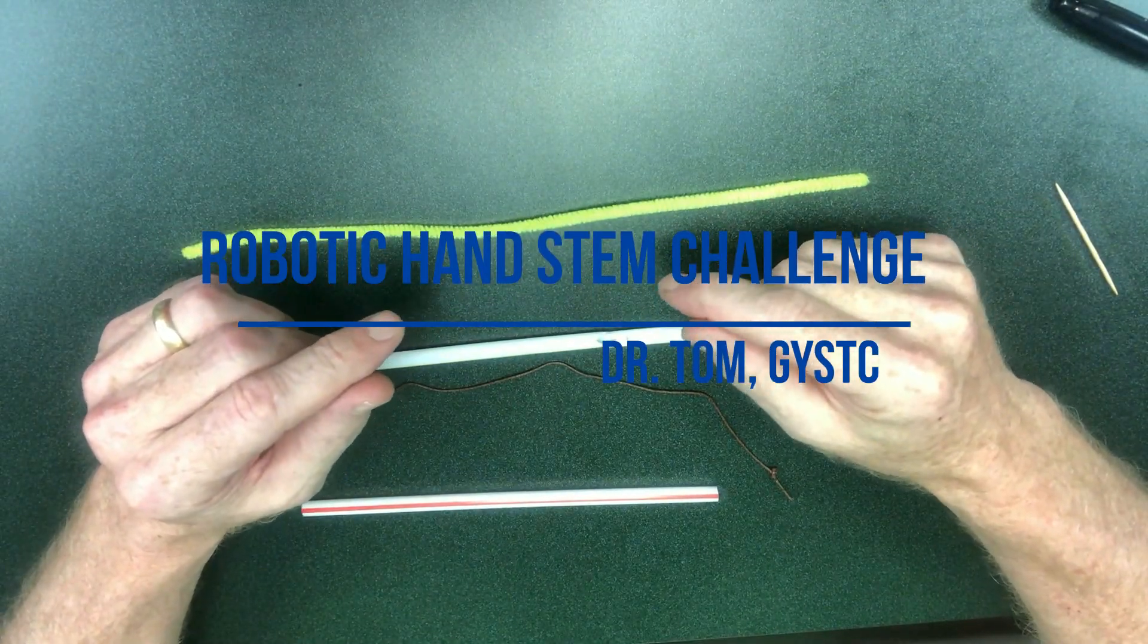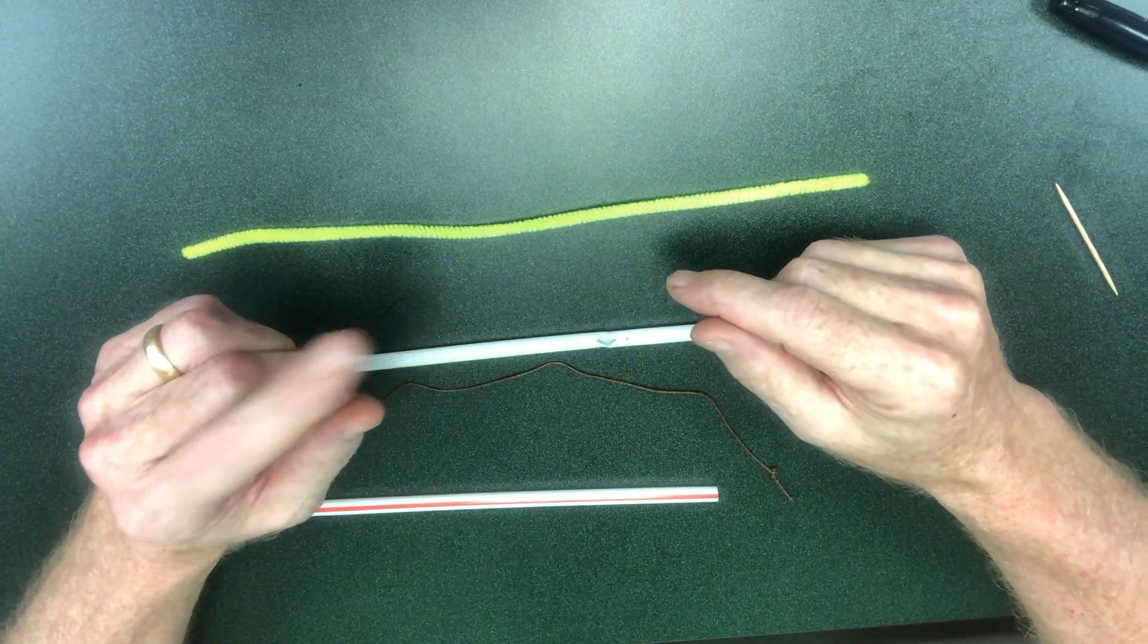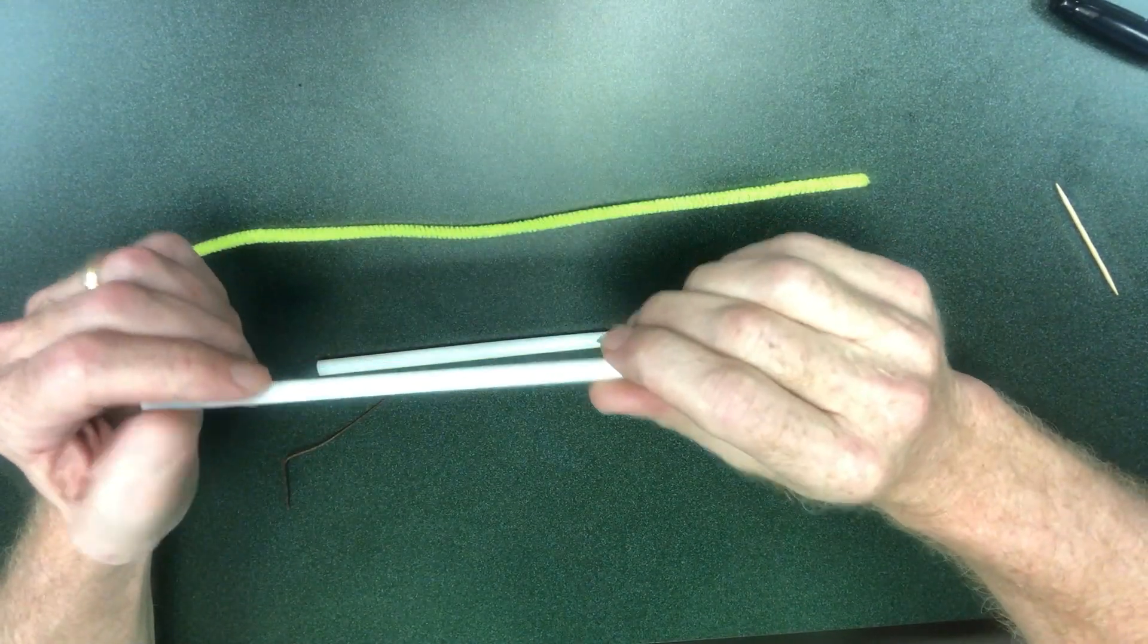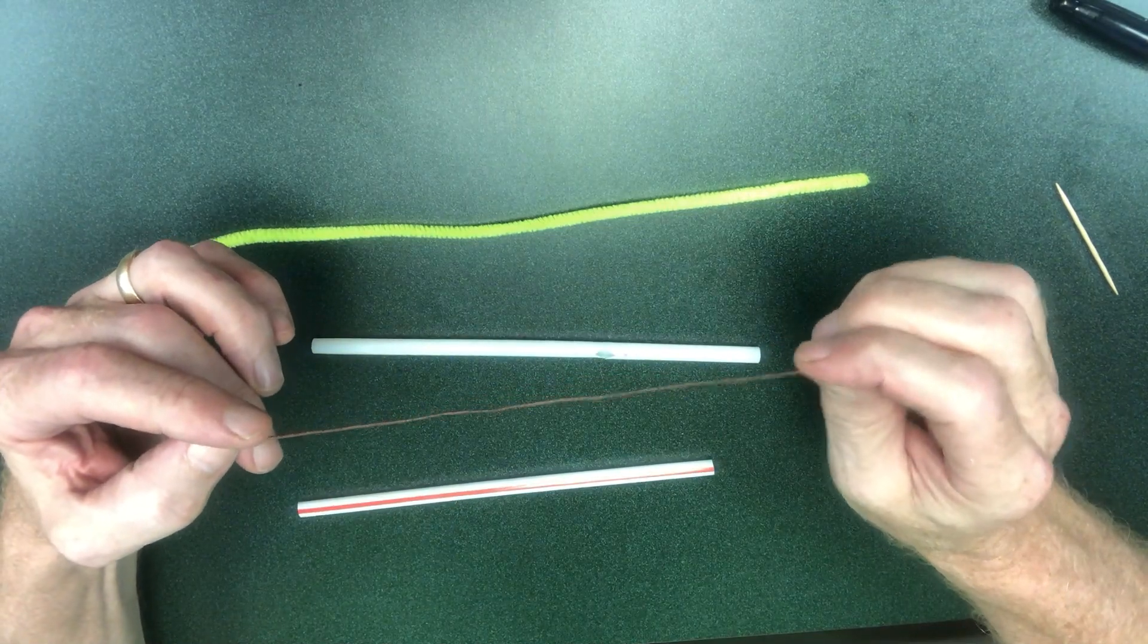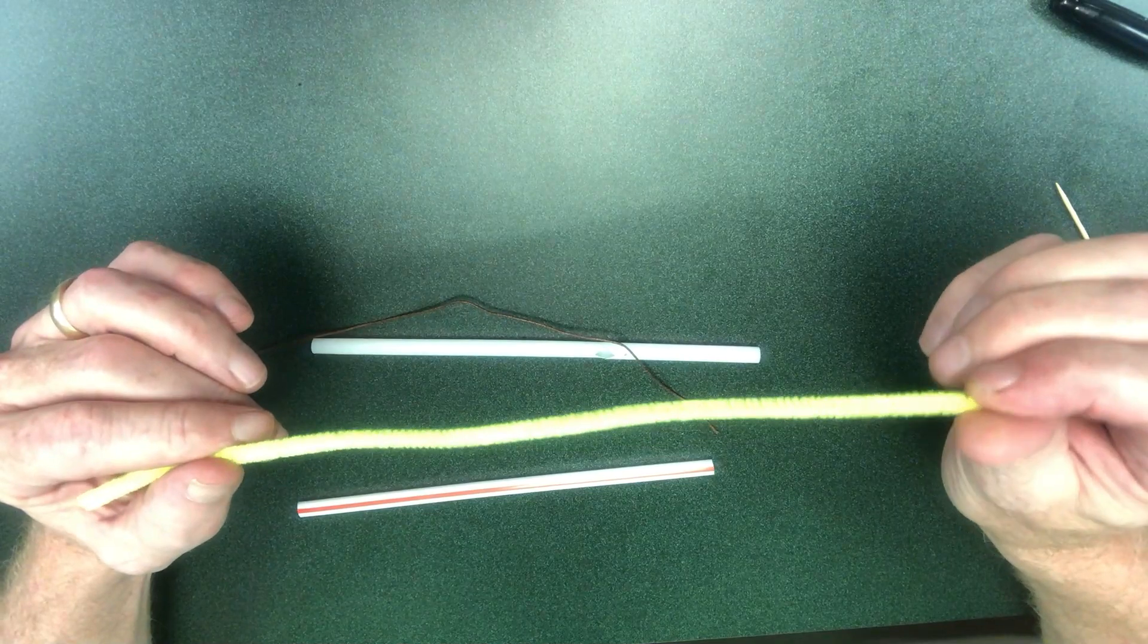Hi, this is Dr. Tom and I just want to touch base on a few things for the robotic hand STEM challenge. The materials for this are pretty simple - you just need a straw and then you need a string. In this case it's a little piece of braiding cord, but string works okay.